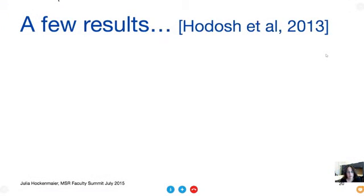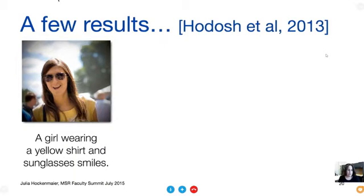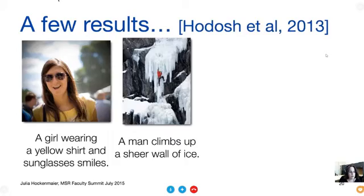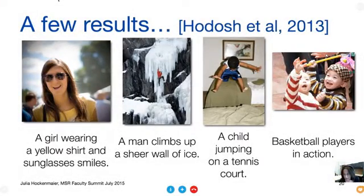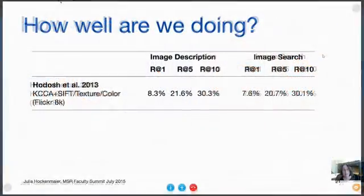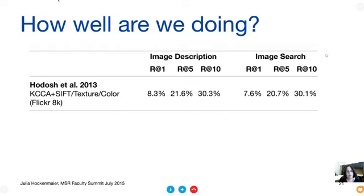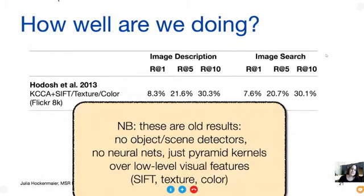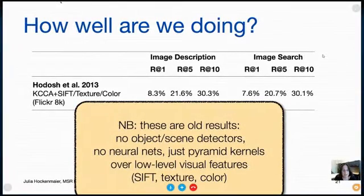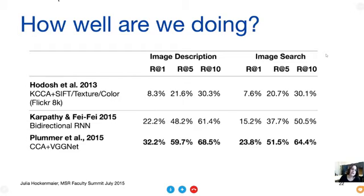Here are some first-ranked captions for each of these images — quite often the system makes mistakes. Numerically, we were really surprised that out of a thousand images, 30% of the time we would get the original item among the top 10. At the time that was unexpected — there are no detectors whatsoever, no neural nets at all. We just used pyramid kernels over very low-level visual features like SIFT, texture, and color. Nowadays we use deep learning and the results have really jumped. These are now results on Flickr 30K, and we're getting really much better results.